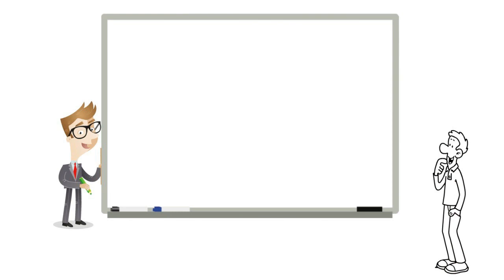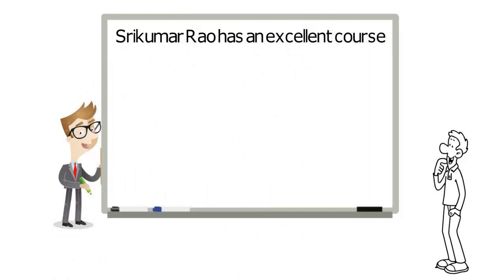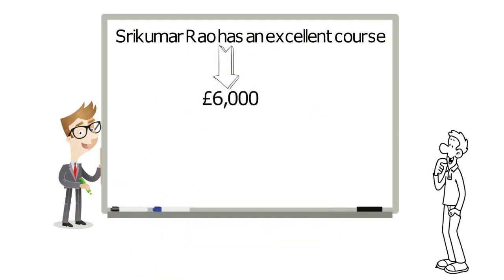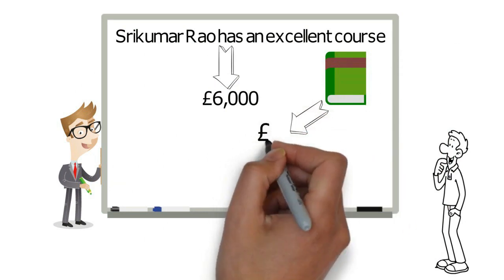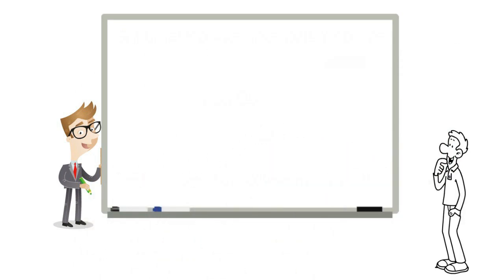Sanjay began today's session by explaining Shri Kumar Rao has an excellent course. I believe everyone should take it. The problem is that it costs about £6,000. His book costs £6. Would the course be 1,000 times more impactful? Perhaps. But perhaps an easier way to begin is to start your private university.